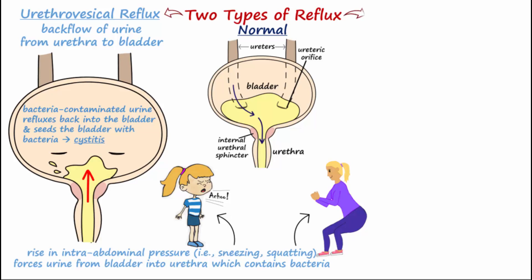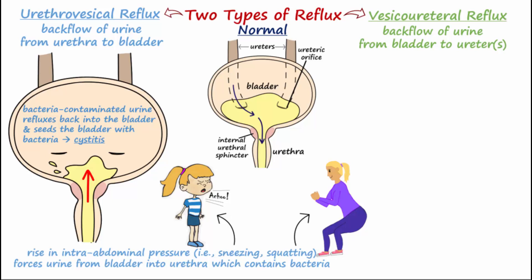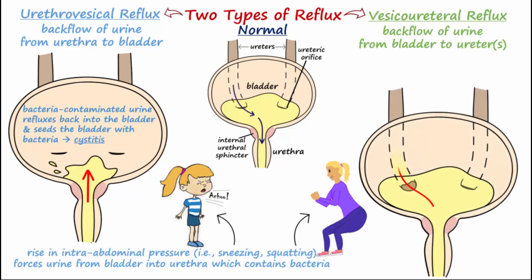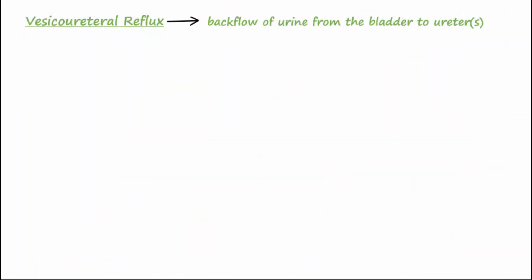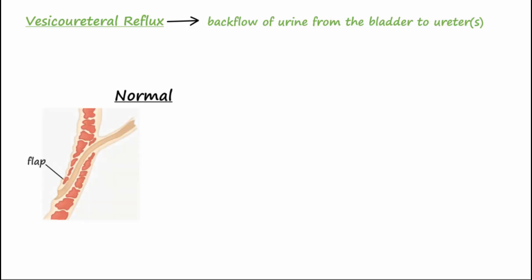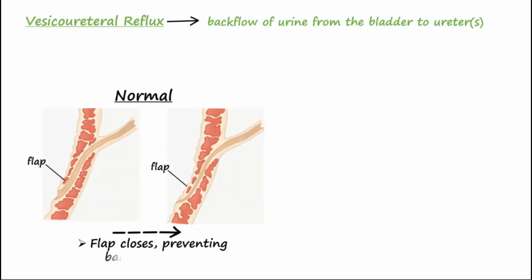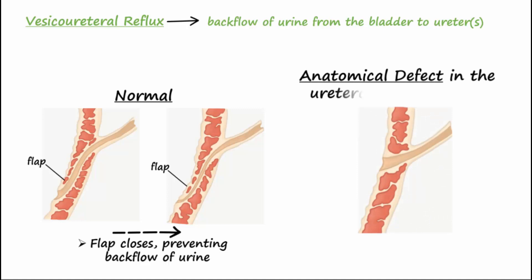With vesico-ureteral reflux, there is a backflow of urine from the bladder into the ureter. This reflux could propel bacteria up the ureters to the kidney, increasing the risk of pyelonephritis. Normally, the ureters insert into the bladder at a steep angle, creating a mucosal flap or valve that maintains one-way urine flow. Vesico-ureteral reflux occurs with an anatomical defect where the ureter inserts more horizontally, so the flap is not created, allowing reflux of urine back up into the kidney.